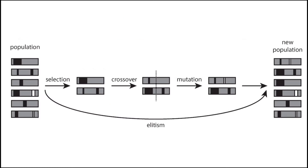This is another diagram illustrating the process: population, select the fittest, breed them together — basically combining their different characteristics or bits. Combine different aspects of their solution together, mutate them to add some diversity, and whatever the result is becomes our new population until we get to the end.